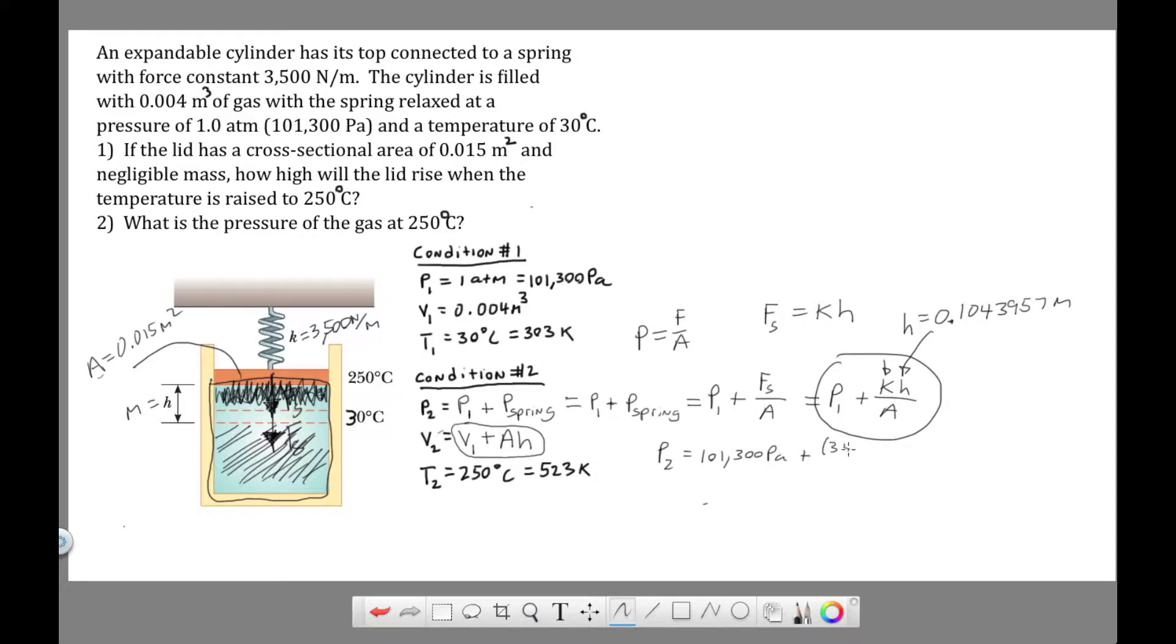This gives us a pressure of 125,659 pascals. So that is P2. And then we can convert that to atmospheres. Converting to atmospheres, that'd be 1.24 atmospheres. All I did is I took this and divided by 101,300 pascals to convert that into atmospheres.